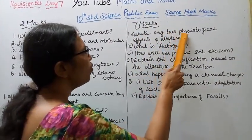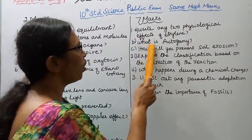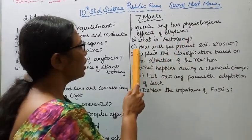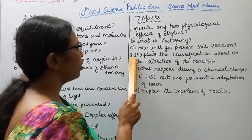Write any two physiological effects of ethylene. B, what is autogamy? C, how will you prevent soil erosion? Second, explain the classification based on direction of the reaction.